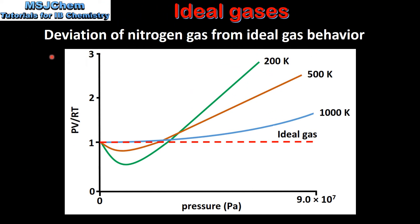In this graph we can see the deviation of nitrogen gas from ideal gas behavior. On the y-axis we have the product of PV divided by RT, and on the x-axis we have the pressure in Pascals. The dashed red line shows the behavior of an ideal gas, for which the product of PV divided by RT is equal to 1 under any conditions.